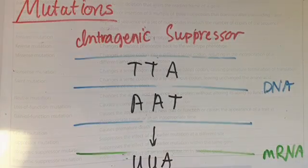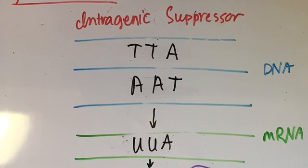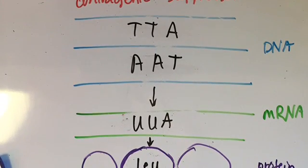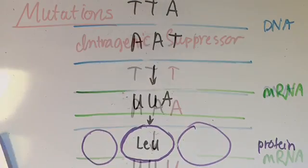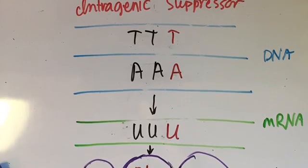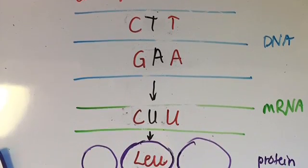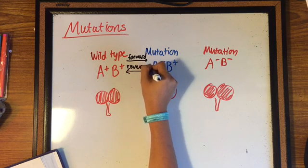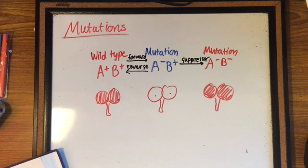We will focus on suppressor mutations, which is a genetic change that hides or suppresses the effect of another mutation. An intragenic suppressor mutation occurs in the gene containing the mutation being suppressed. So a missense mutation alters a single codon and then a second mutation at a different site in the same gene may restore the original amino acid. This is different from a reverse mutation because it occurs at a different site from that of the original mutation, but still produces the wild-type phenotype.